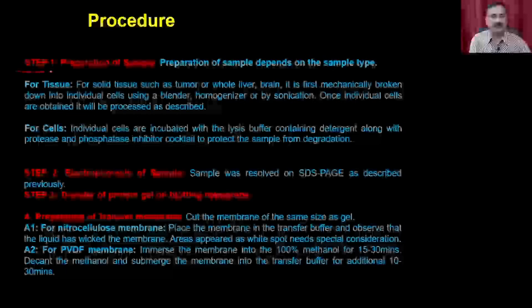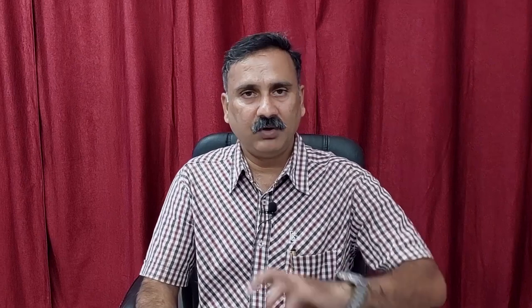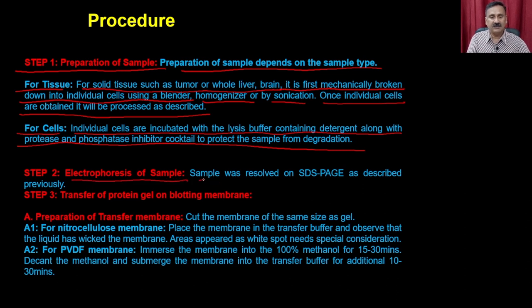In step one, you prepare the sample. Preparation depends on sample type — for solid tissue such as tumor, whole cell, or brain, it is first mechanically broken down into individual cells using a blender, homogenizer, or sonication. Once the individual cells are obtained, they are incubated with lysis buffer containing detergent along with a protease and phosphatase inhibitor cocktail. In step two, you do electrophoresis — samples are resolved on SDS-PAGE as previously discussed.